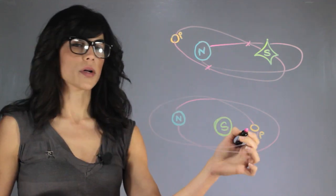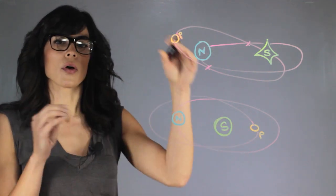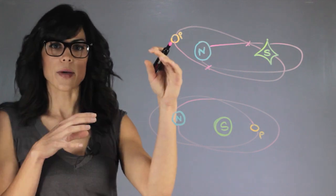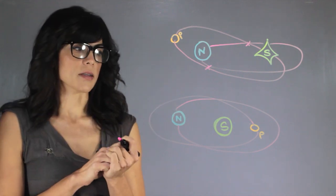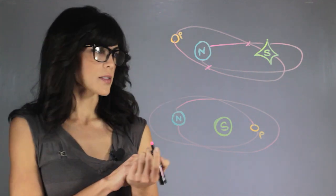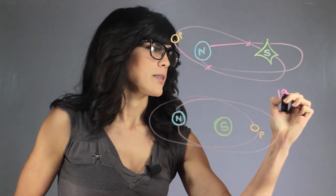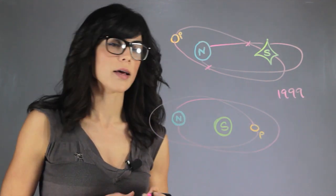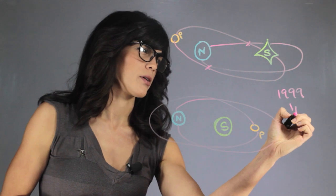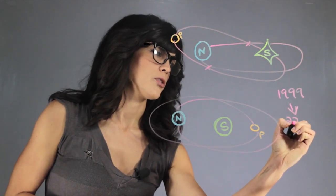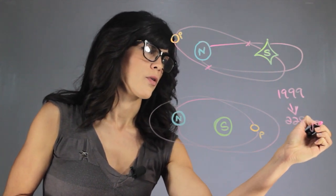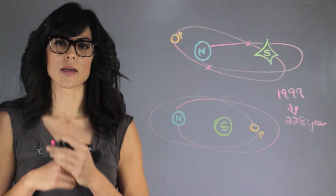So depending where it crosses, it can actually go in front of Neptune momentarily, and the last time they crossed was in 1999, and it's gonna take like another 228 years for Pluto to switch back with Neptune again.